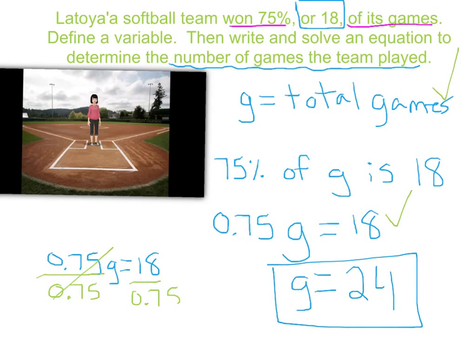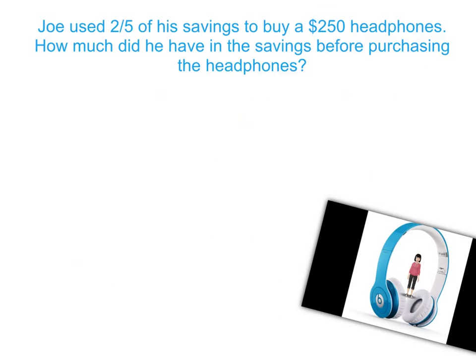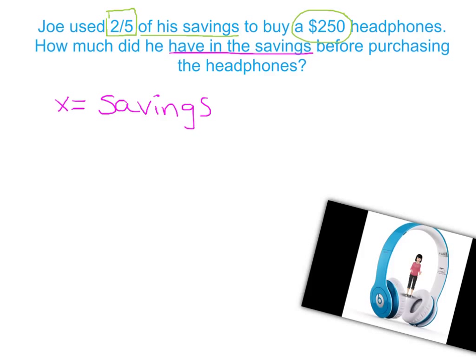Define the variable, write the equation, and solve it. Here's our last example: Joe used two-fifths of his savings to buy $250 headphones. How much did he have in his savings before purchasing the headphones? So two-fifths of his savings is $250, because he had to pay $250 for the headphones, which represents two-fifths of the total savings. Looking at the question — how much did he have in savings — that's our variable, the money in his savings.